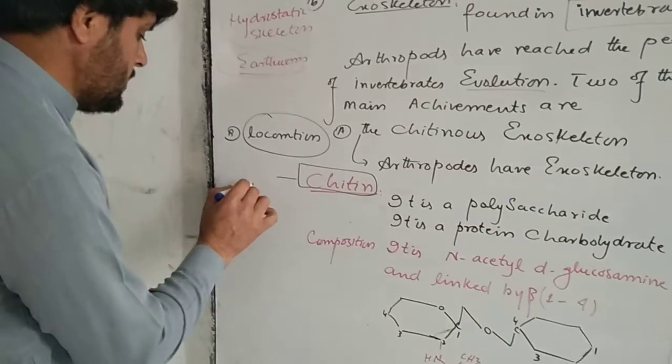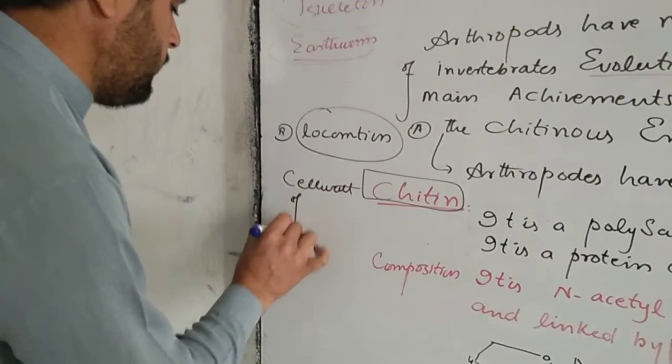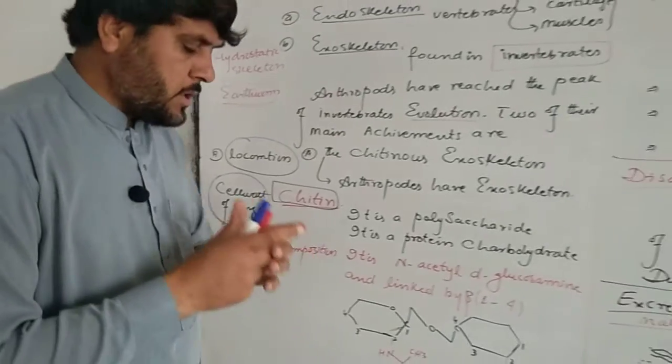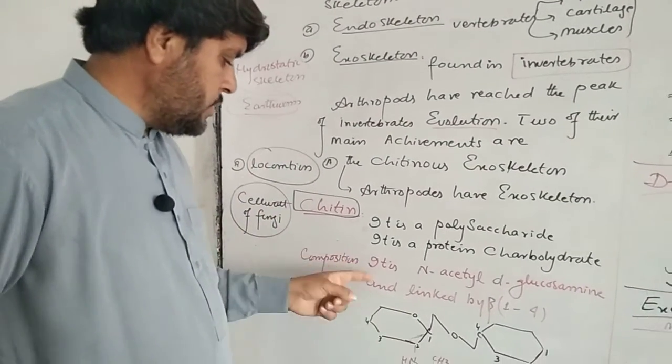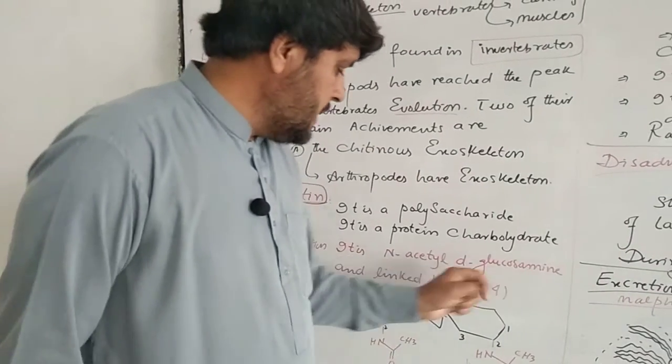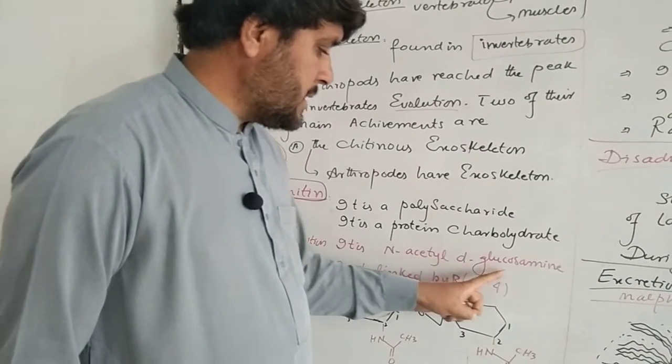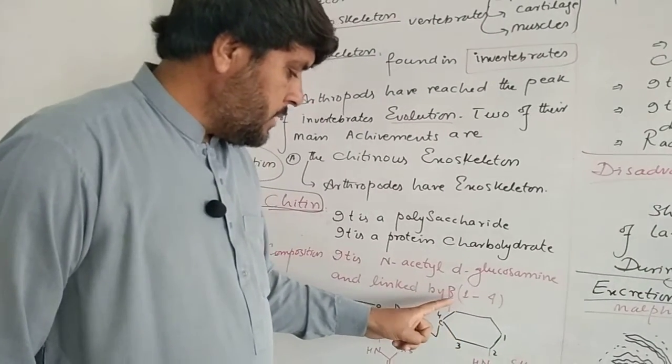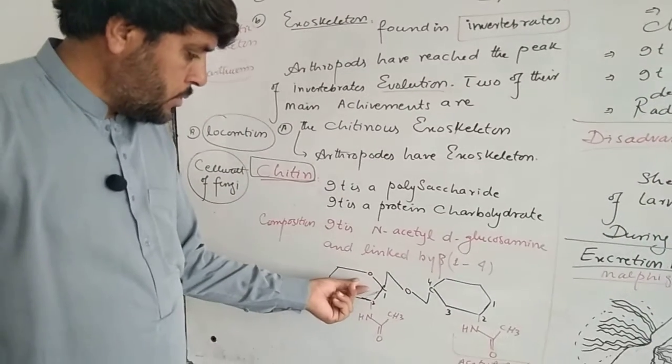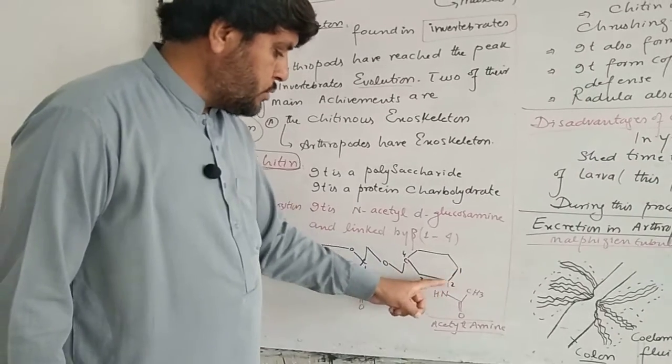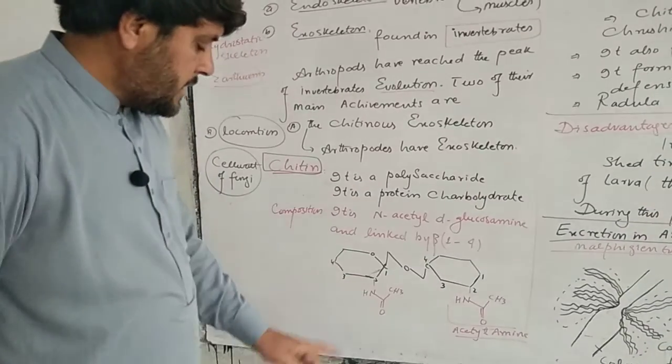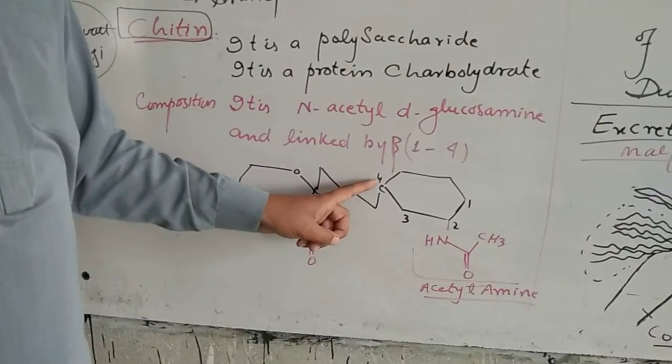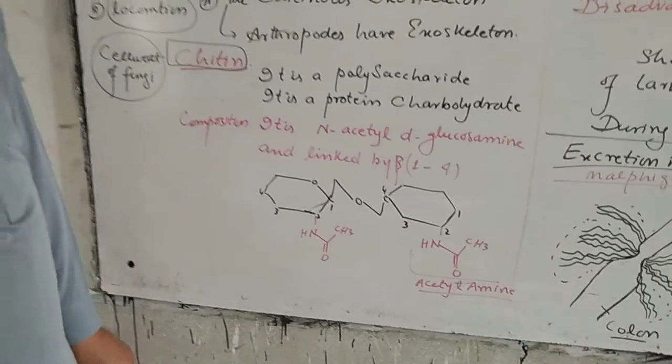Point to be noted: this chitin is also found in the cell wall of fungi. It is composed of N-acetyl-D-glucosamine. The bond that forms is glycosidic bond - specifically beta-1-4 glycosidic linkage between glucose units. The bond forms between carbon number one and carbon number four, therefore it is called one-four linkage.